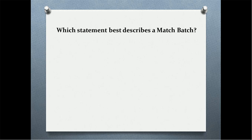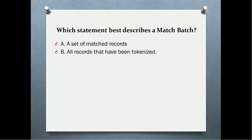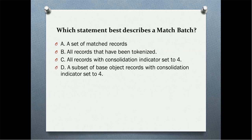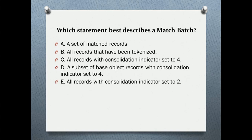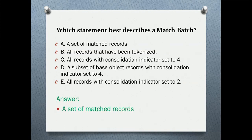Which statement best describes a match batch? The options are: it is a set of match records; all records have been tokenized; all records with consolidation indicator set to 4; a subset of base object records with consolidation indicator set to 4; or all records with consolidation indicator set to 2. The correct answer is: it is a set of match records. The other options are close but do not appropriately describe a match batch.